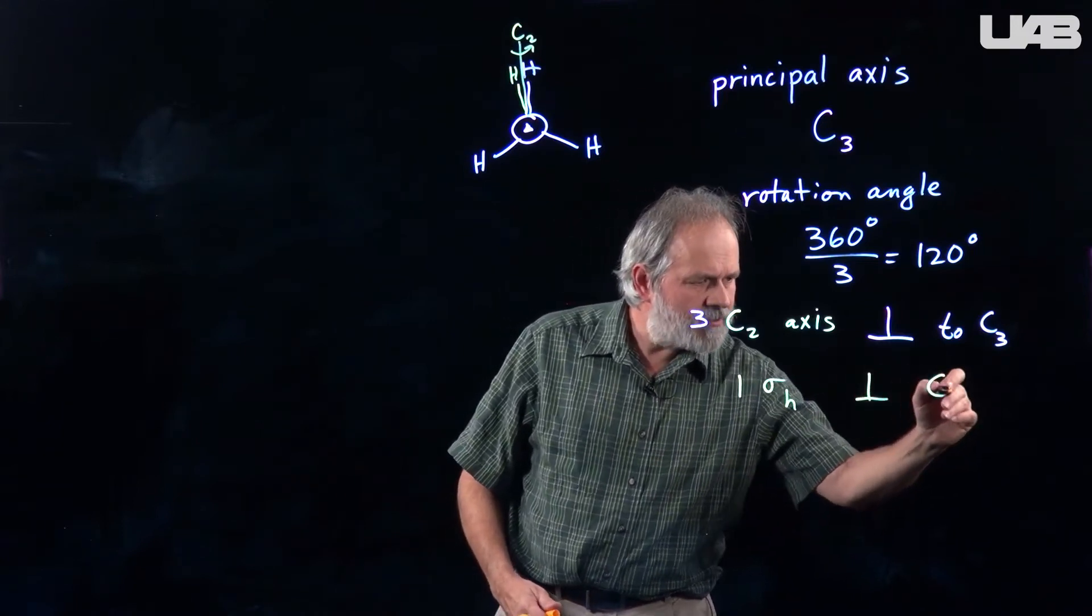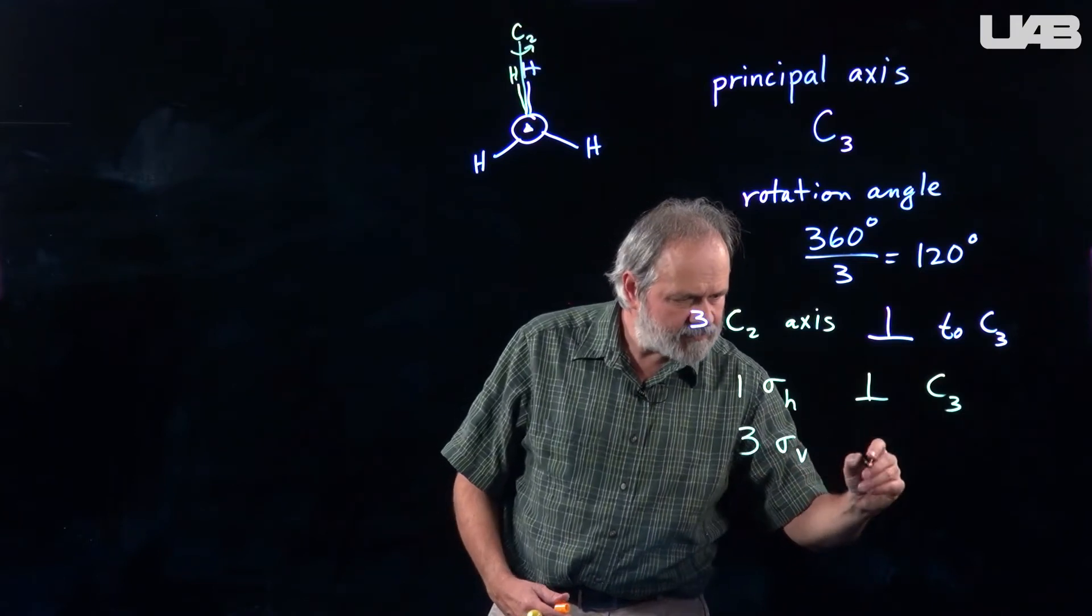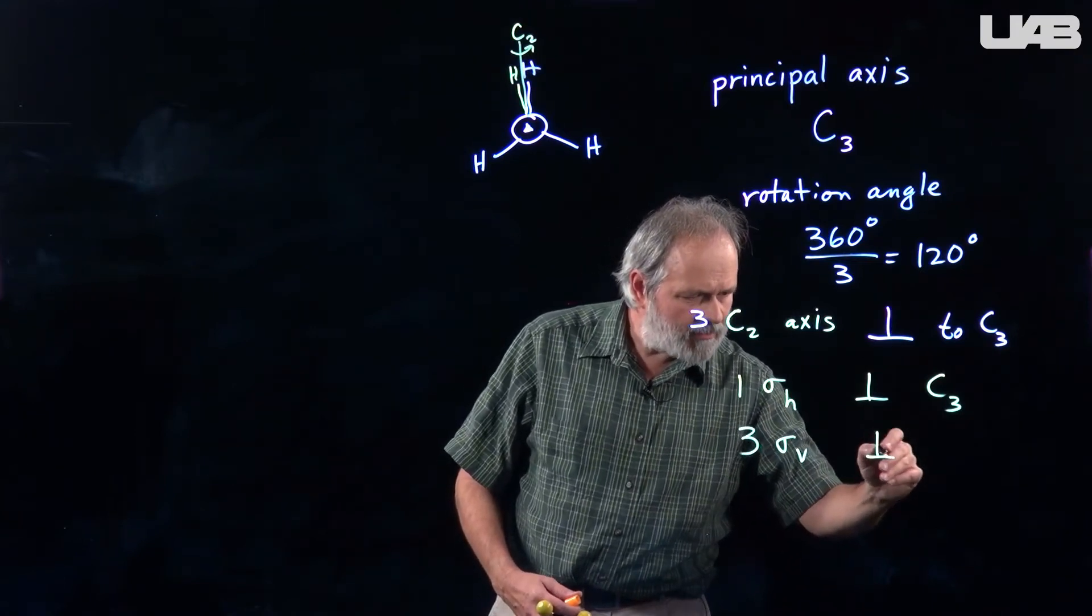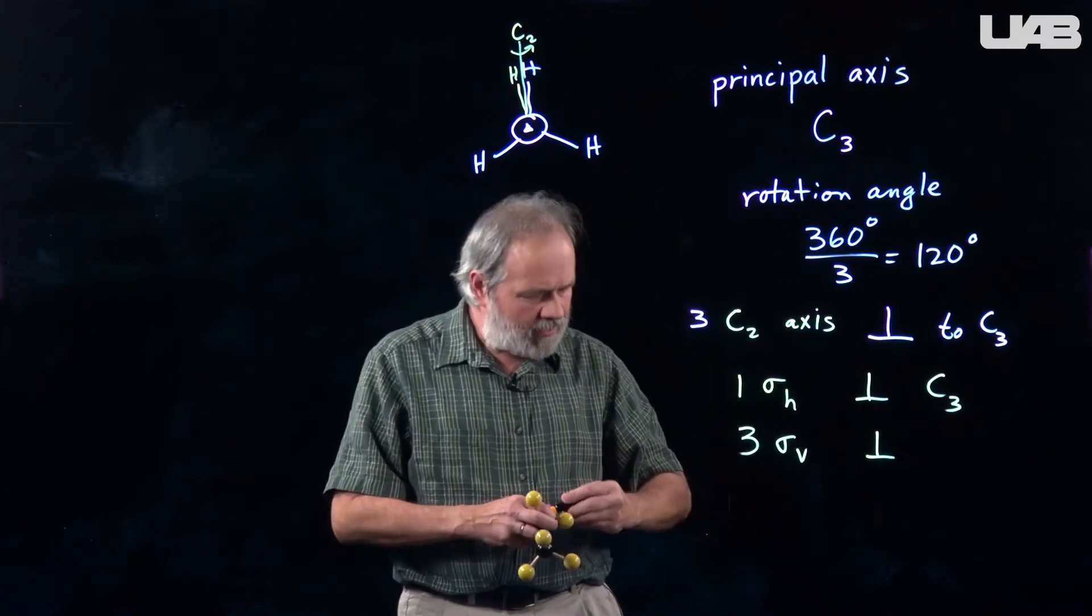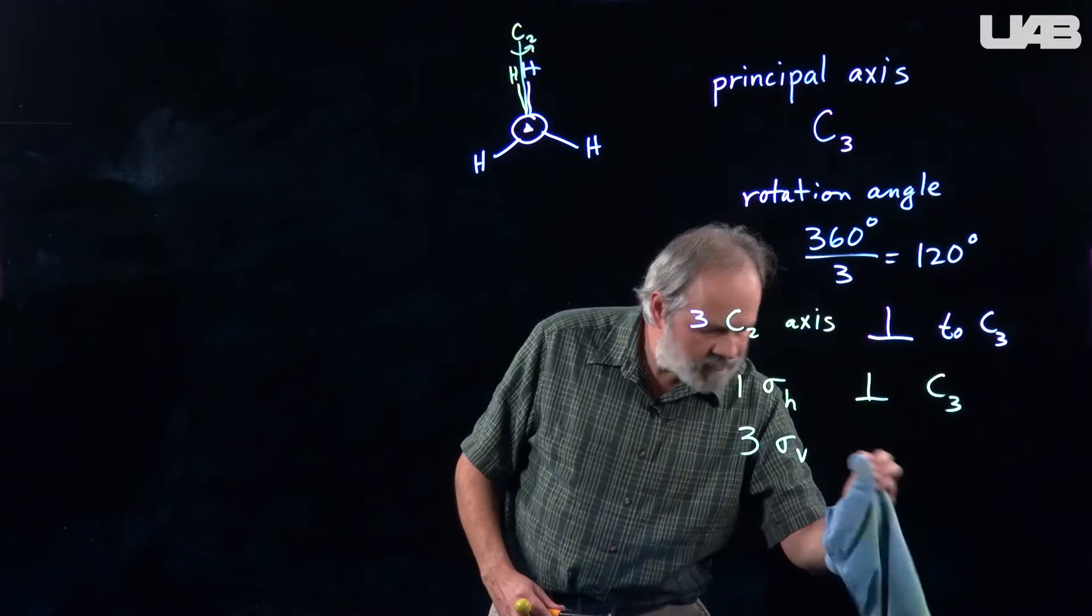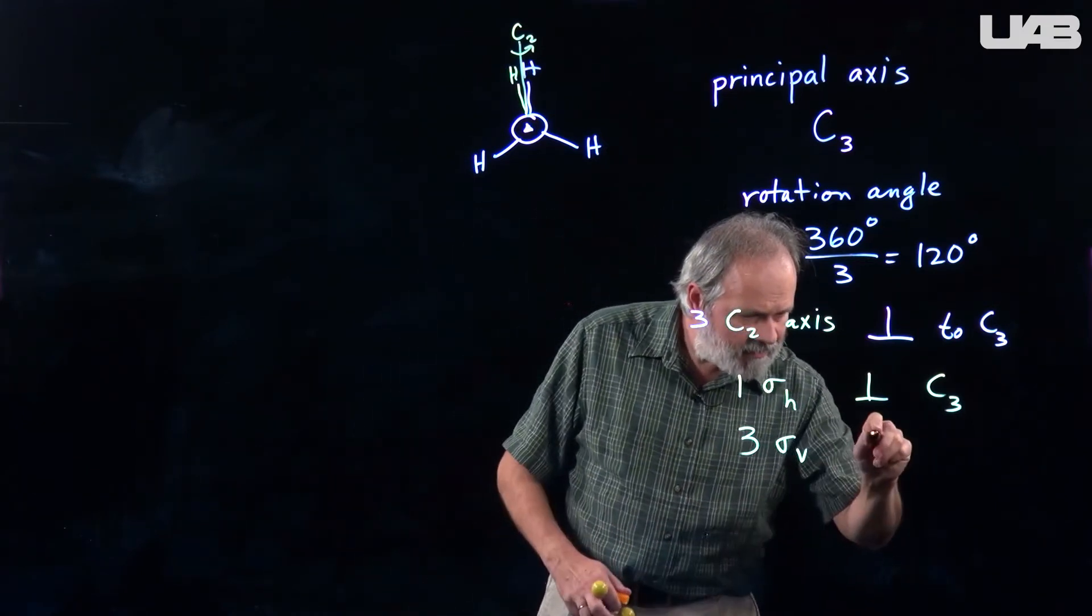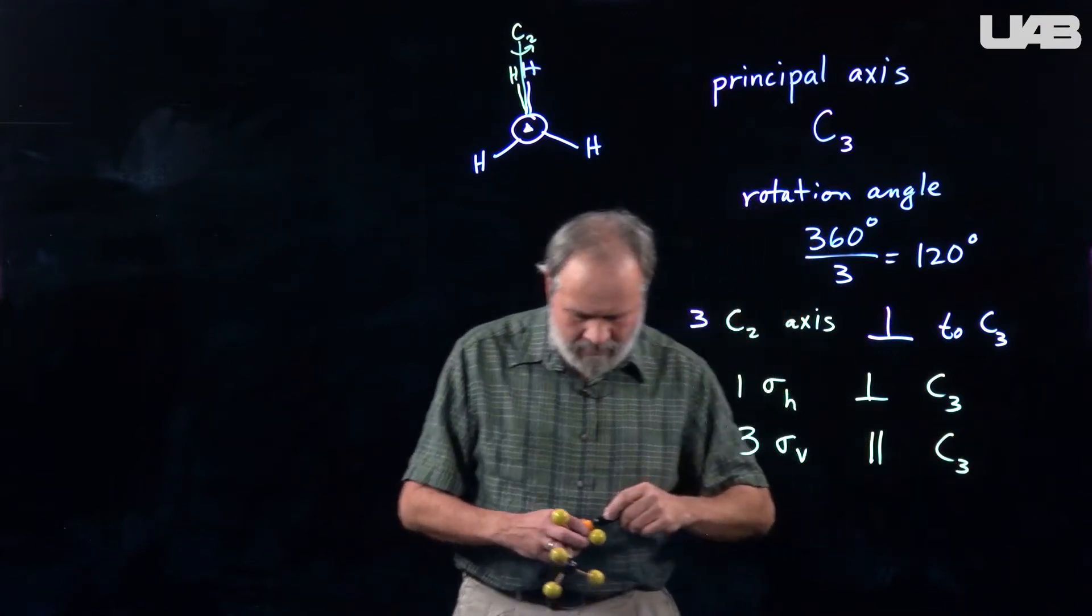One sigma H. That's perpendicular to the C3. And we'll have three sigma V's which are parallel to the C3 axis.